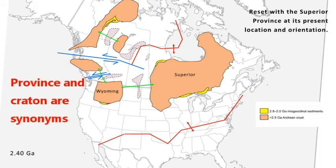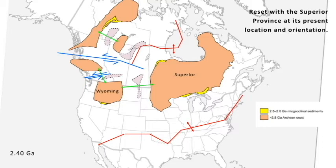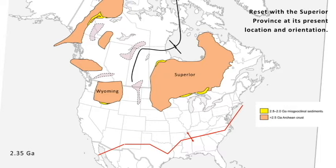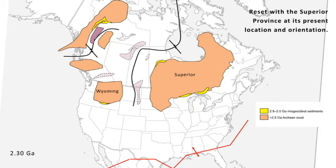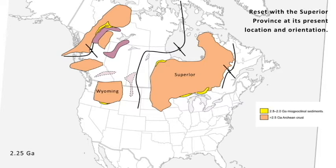At 2.4 Ga, more microcontinents are forming, a couple more transform boundaries appear, but rifting is still ongoing and everything is moving apart. We're getting passive margin yellow sediments depositing. By about 2.35 Ga, rifting on the southern part of the Superior Craton is still happening, but the other rifting has stopped and we're starting to see closing of the ocean basin — this is the midpoint of a Wilson Cycle, from rifting and opening of an ocean basin to its closing. Our microcontinents remain submerged below sea level.